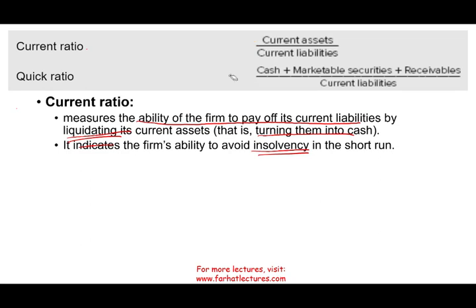On the CPA exam or on your exam, you might be asked a simple question: compute the current ratio. The current ratio is current assets divided by current liabilities. To understand this, use simple numbers. For example, say if I have $10 million of current assets and $5 million of current liabilities — 10 divided by 5, the answer is 2. What does that mean? It means for every $1 in liabilities, you have $2 in assets — or as a simplified ratio, 2 over 1.